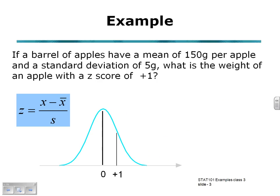In the first example, if a barrel of apples have a mean of 150 grams per apple and a standard deviation of 5 grams, what is the weight of an apple with a Z-score of plus 1? Our formula, Z is X minus X bar divided by S.